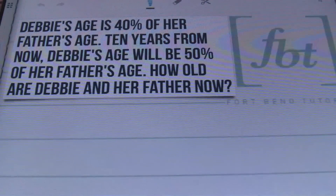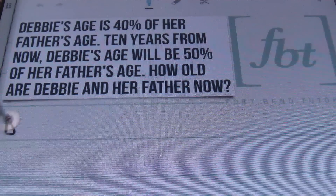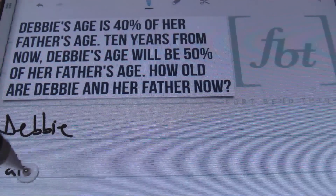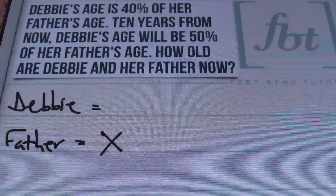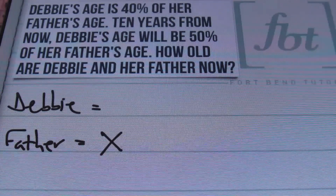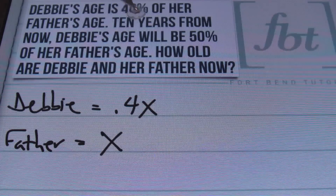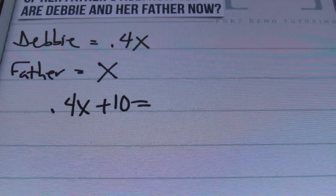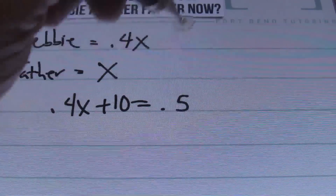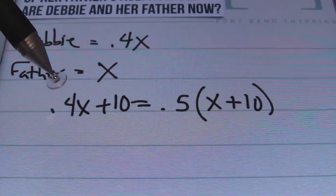Now we move on to problem number four. Debbie's age is forty percent of her father's age. Ten years from now, Debbie's age will be fifty percent of her father's age. How old are Debbie and her father now? We have two people: Debbie and the father. We don't know how old her father is, so that's x. Debbie's age is forty percent of her father's age, so we'll write that as 0.4x, converting that percent into a decimal. Ten years from now, our equation is: 0.4x plus ten equals 0.5 times (x plus ten).